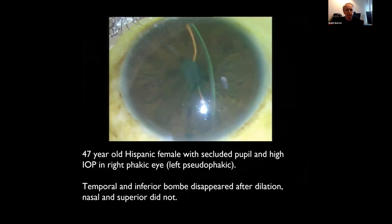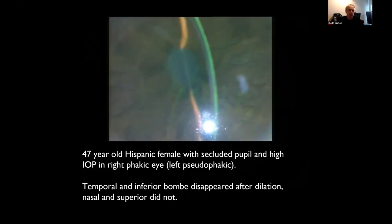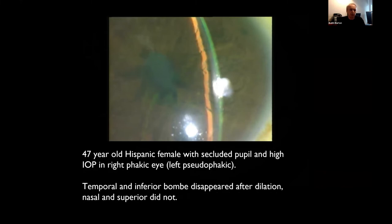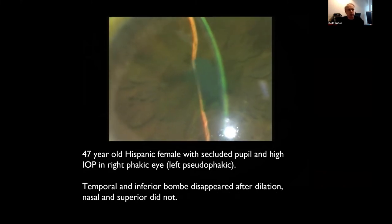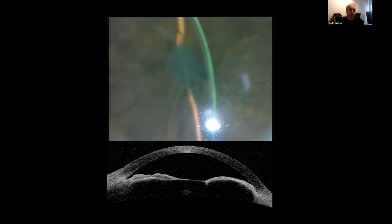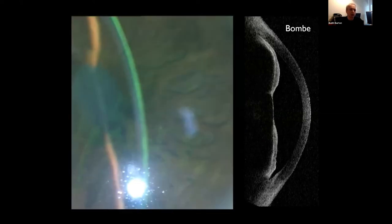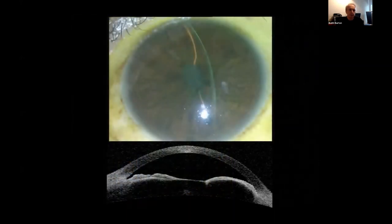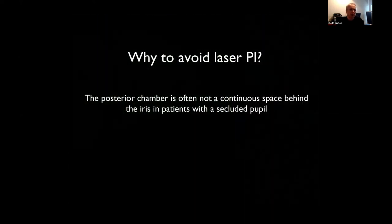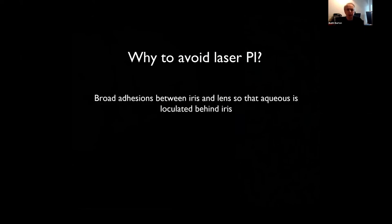This is a 47-year-old Hispanic lady with secluded pupil and high IOP in her right eye. She's pseudophakic in the other eye. Interestingly, when I dilated her pupil the iris bombé disappeared in two quadrants but not the other two — this illustrates how aqueous is loculated in these patients. She's got bombé superiorly but not inferiorly — the posterior chamber is not a continuous space in these patients. There are broad adhesions between the iris and lens, not just at the pupil.